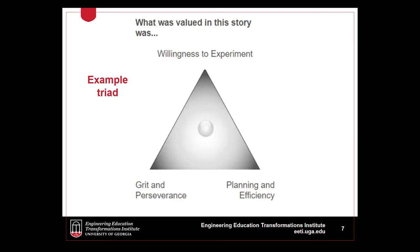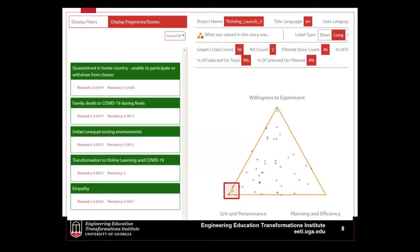This is an example of a triad. After participants tell their stories, they make sense of them by moving a dot on the triad to the position that best fits. On the analyst software side, each dot represents one story, and we can use that software to highlight clusters of stories. For example, here I have selected stories in the grip and perseverance corner of the triad. Clicking on a title on the left-hand side allows me to read the entire participant story.